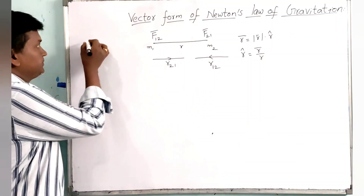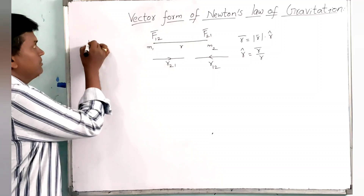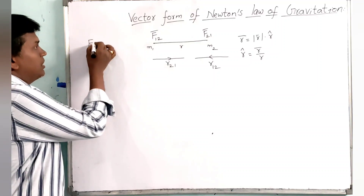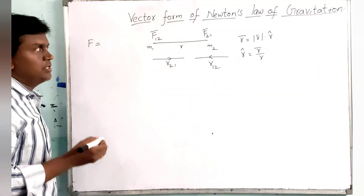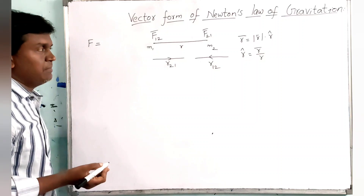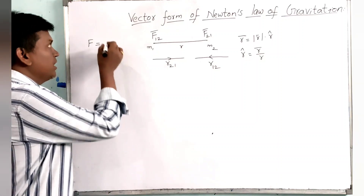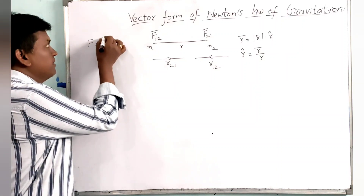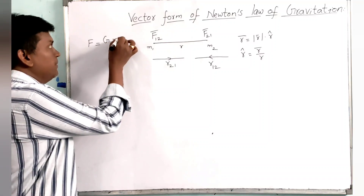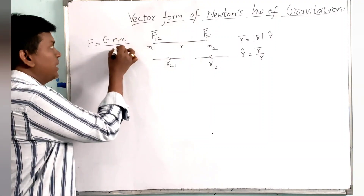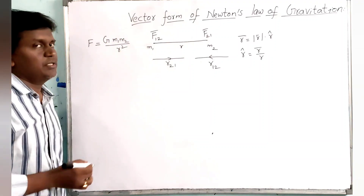From Newton's law of gravitation, the force of attraction between two masses is directly proportional to the product of the masses and inversely proportional to the square of the distance between them. This can be written as G M1 M2 divided by R square.